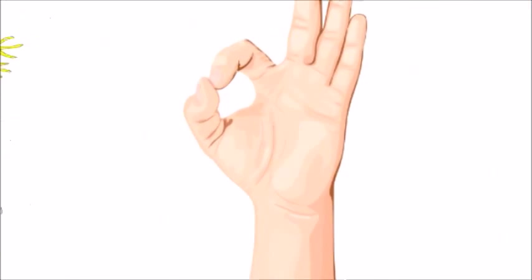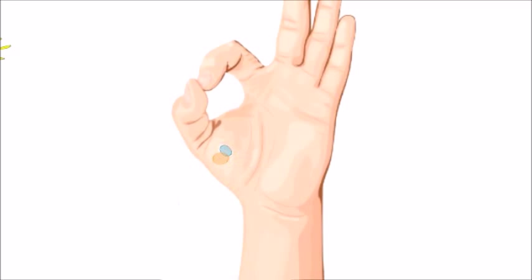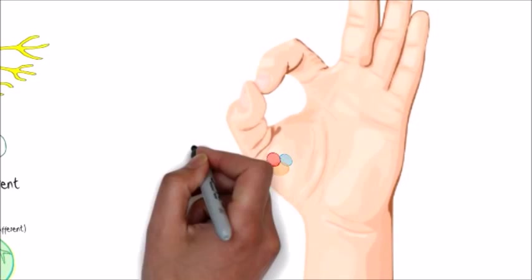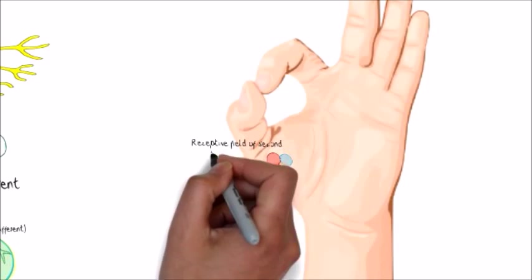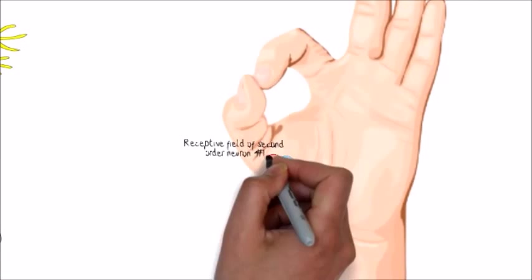The receptive fields are the body locations that, when stimulated, activate each specific neuron, pictured here for each neuron and for the second-order neuron.